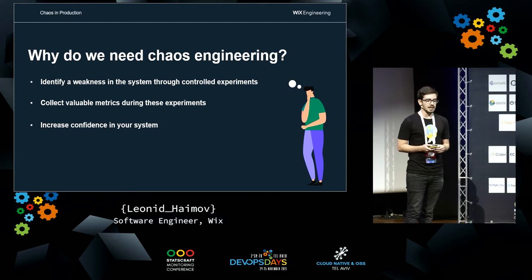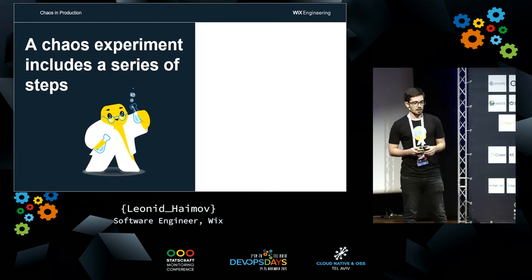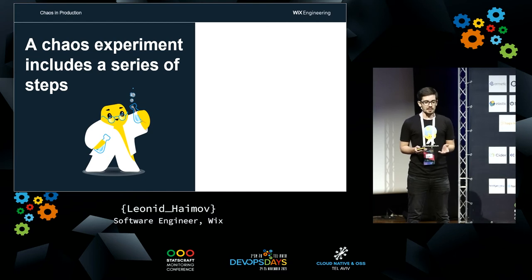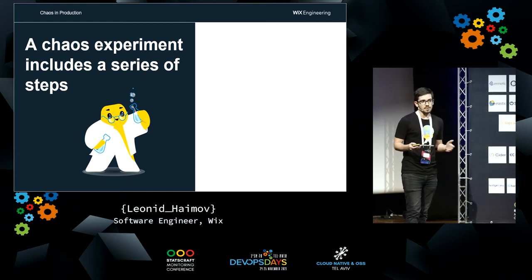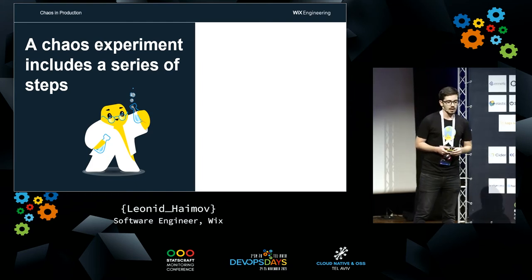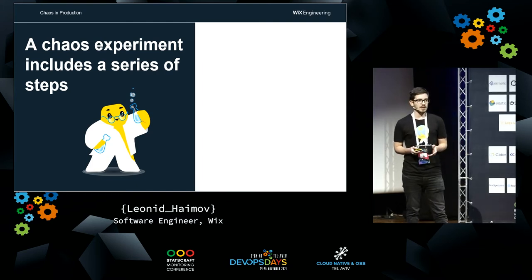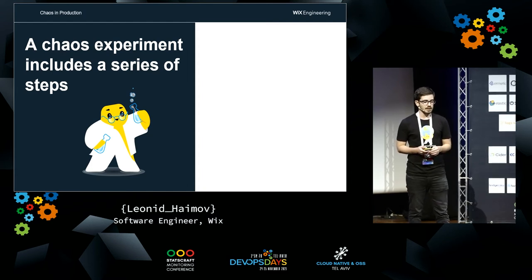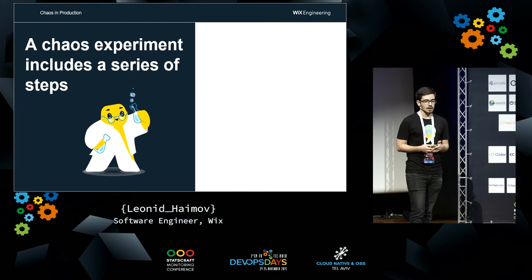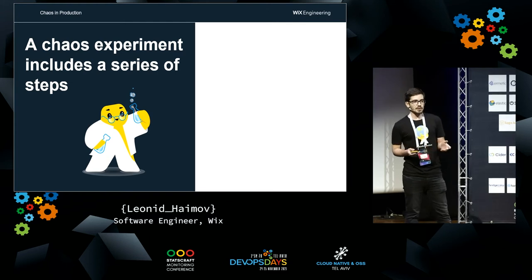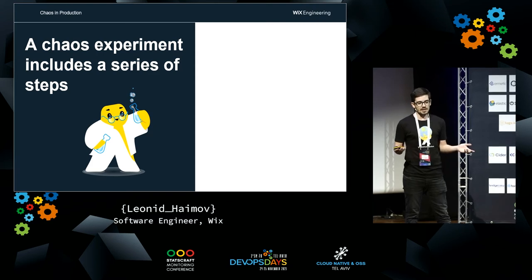Now, what is a chaos experiment? A chaos experiment is an automated set of steps that injects chaos into the system. To create a chaos experiment, you first need to understand what kind of case you're going to run. Let's say our system has 10 servers up and running and they're communicating with each other — what's going to happen if we emulate one of the servers suddenly dying? Let's do exactly that.